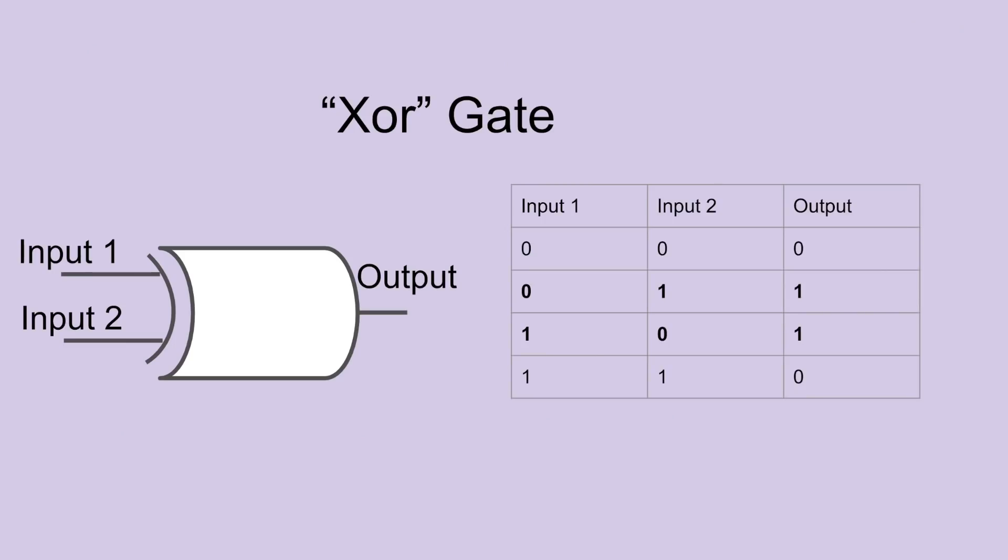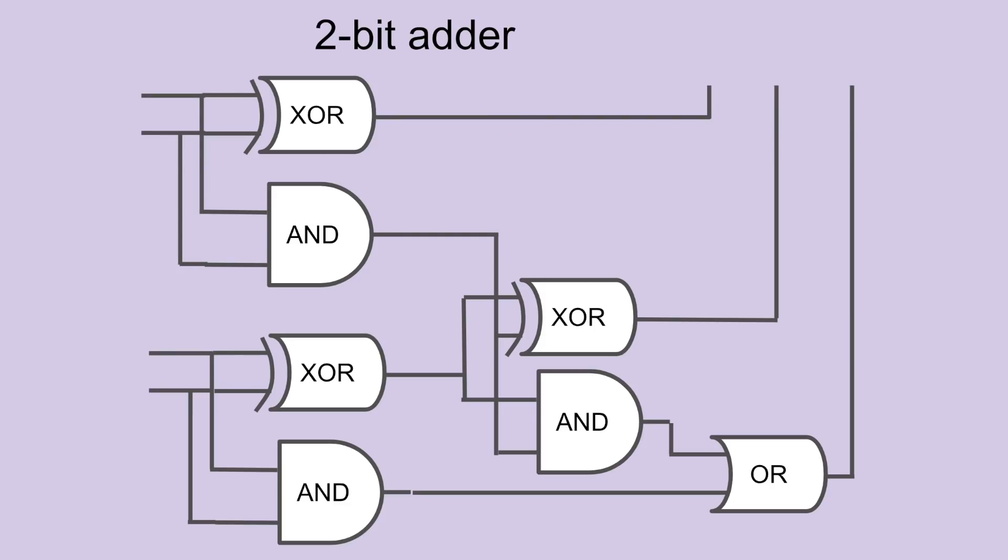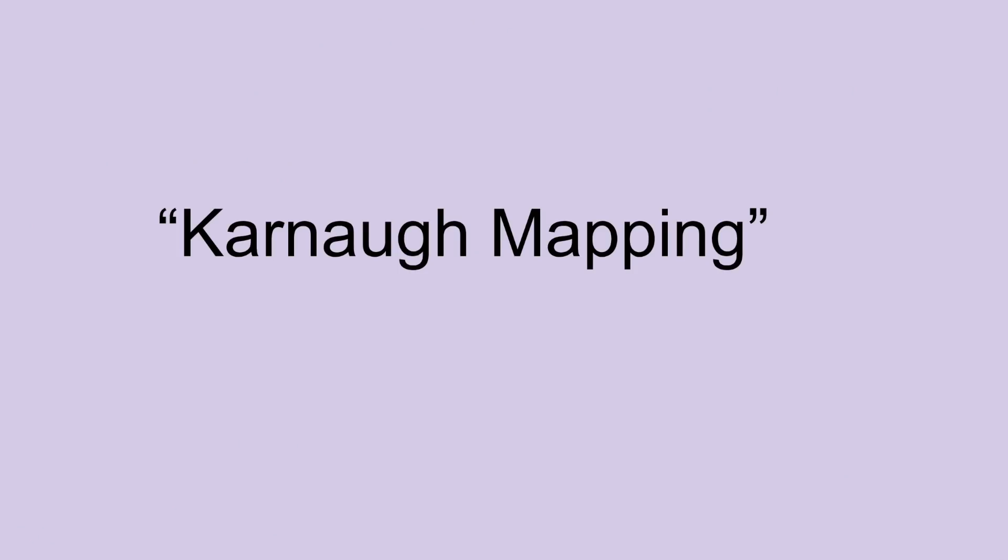So now we can revisit our original problem, 2 plus 3. We will arrange our four digital logic gates like this, to create a 2-bit adder circuit. There are ways of solving exactly what components need to be arranged and how to arrange them to perform different tasks, and if you're interested look into Karnaugh mapping. But back to our adder.